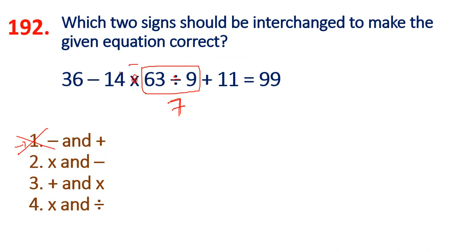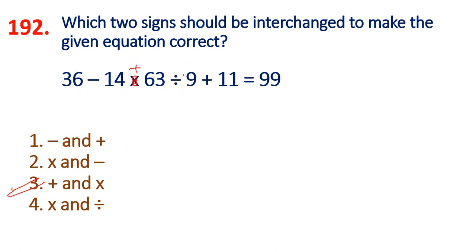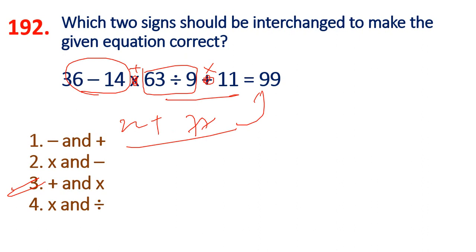Multiplication is minus. Here is minus, here is multiplication. 14 x 7 is 98. 98 plus 36 minus 11 is 99. So the answer 99 is correct. Plus is multiplication. 7 x 11 is 77. It is already minus 7. 77 and 36 and 14 gives 22. 22 plus 77 is exactly 99. So this is plus multiplication: 7 x 11 is 77, 22 plus 77 is 99.